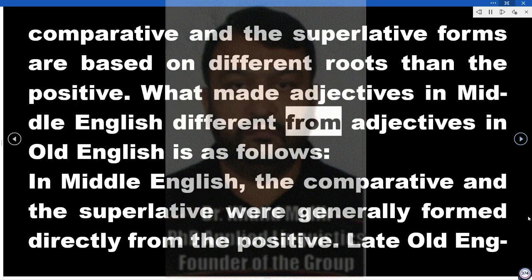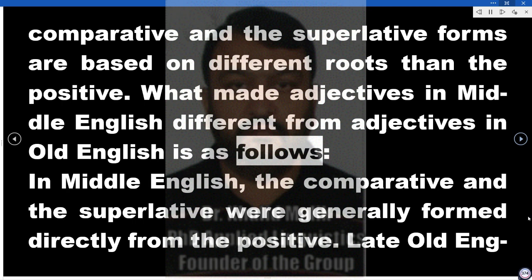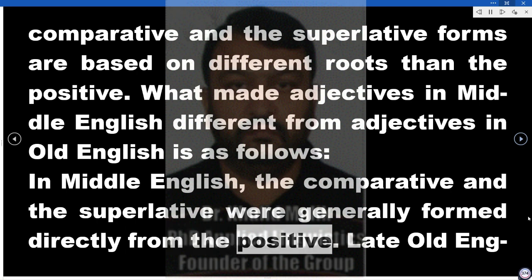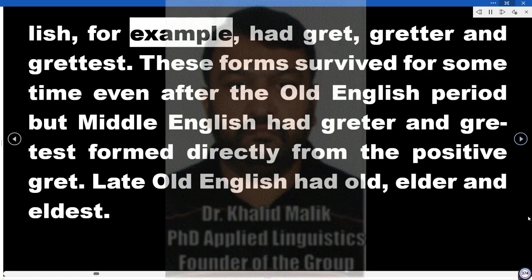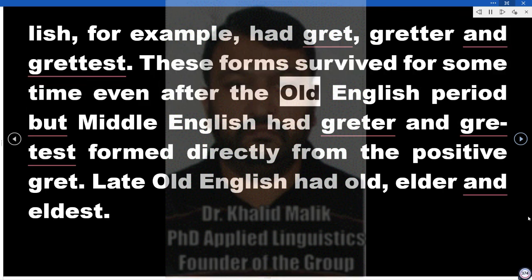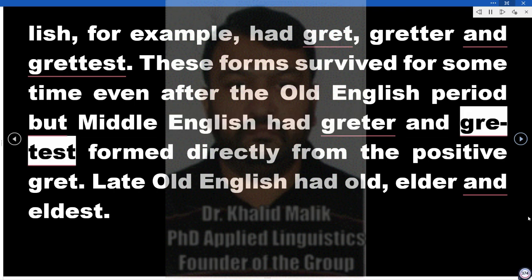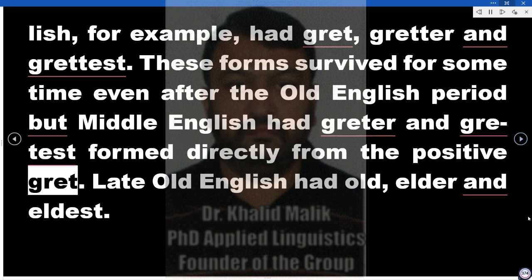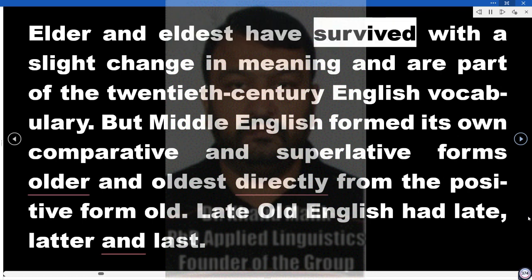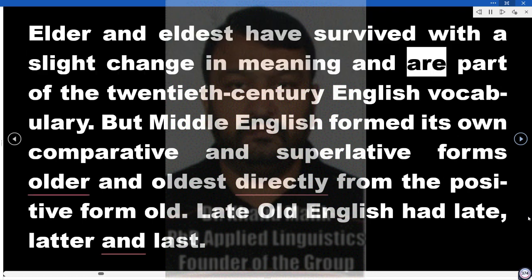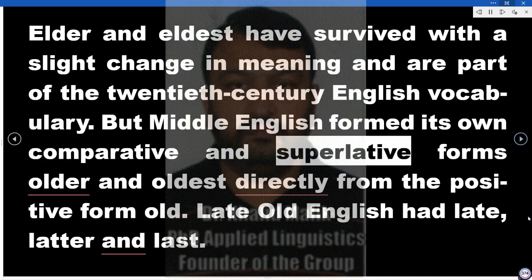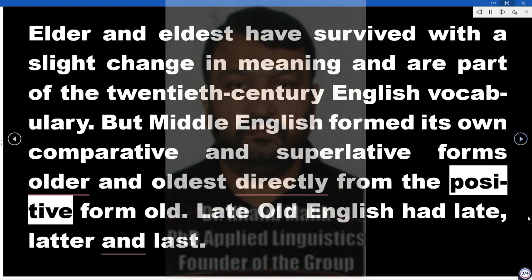What made adjectives in Middle English different from those in Old English is as follows. In Middle English, the comparative and superlative were generally formed directly from the positive. Late Old English, for example, had 'gret', 'gretter', and 'grettist'. These forms survived for some time but Middle English had 'gretter' and 'grettest' formed directly from the positive 'gret'. Late Old English had 'old', 'elder', and 'eldest'. Elder and eldest have survived with a slight change in meaning and are part of the 20th century English vocabulary, but Middle English formed its own comparative and superlative forms 'older' and 'oldest' directly from the positive form 'old'.